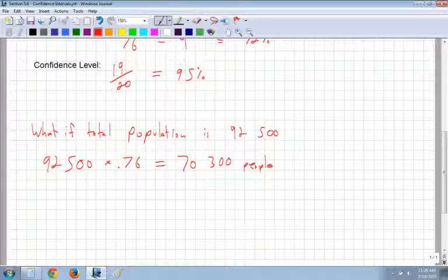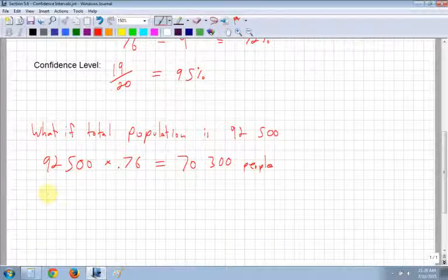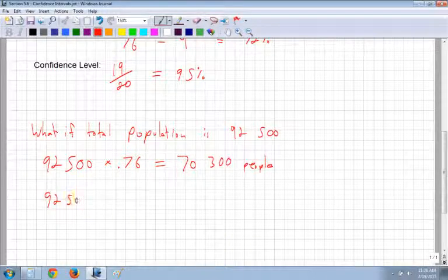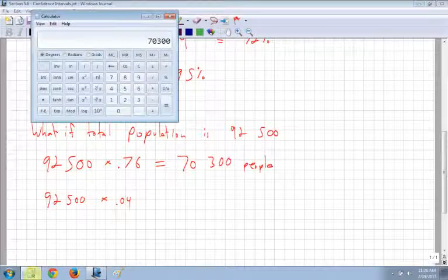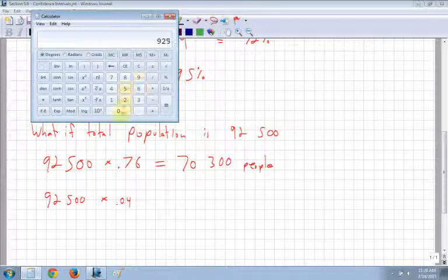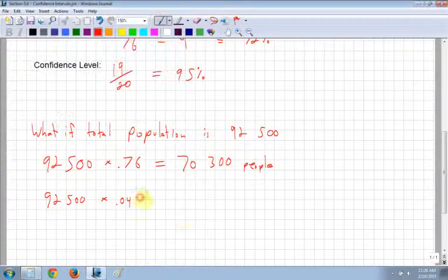But remember that there's a bit of error, right? There's actually a 4% error. Well, let's see how many people that corresponds to. Here's my 92,500 people times by 0.04. So I have 92,500 times 0.04 is 3,700 people.